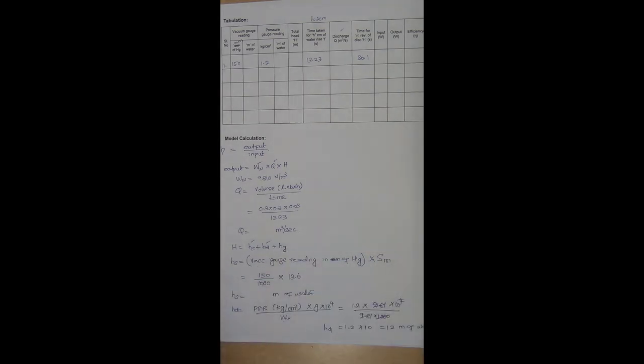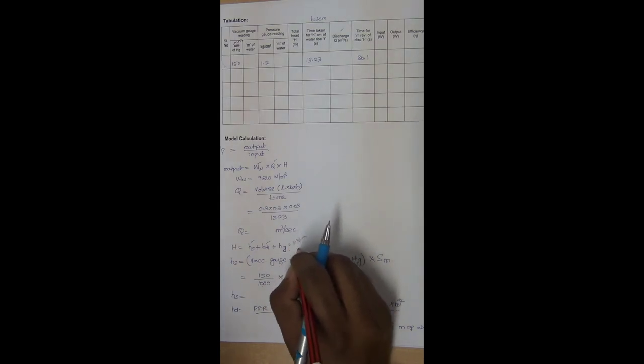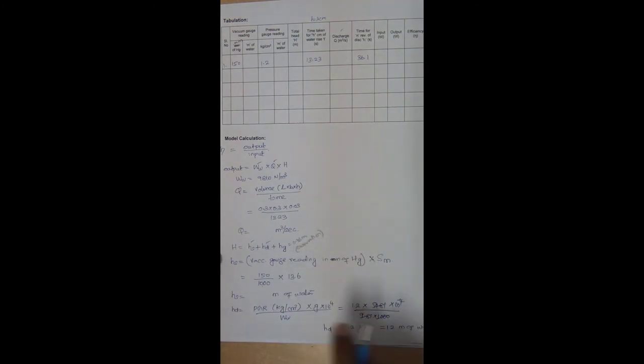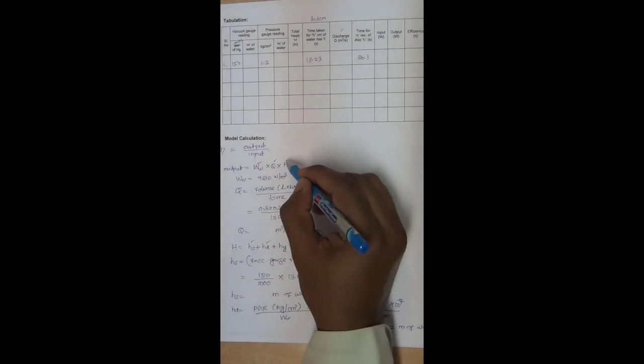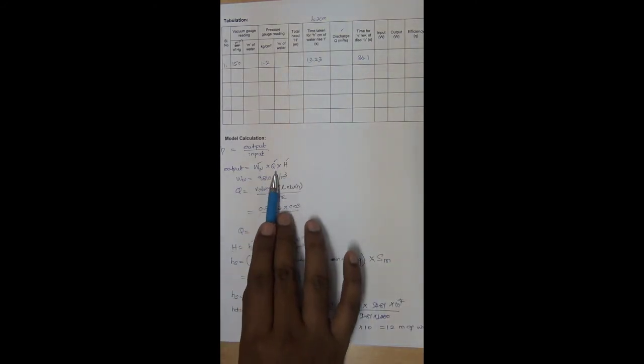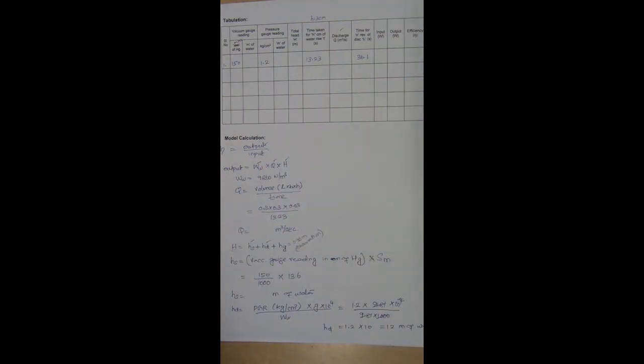Hg is given as 36 centimeter. So 0.36 meter, from observation. It is given in the observation. So we can add Hs plus Hd plus Hg to get total head. So we have got total head here. This column is fit. So once we know ww, Q and H, we can calculate output power. So output power column is also over. So whichever we have calculated.